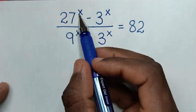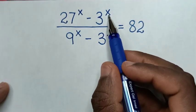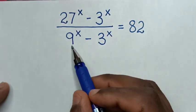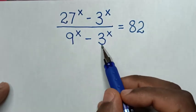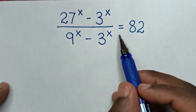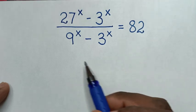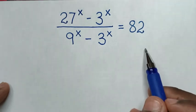How to solve (27^x minus 3^x) over (9^x minus 3^x) is equal to 82? We need to find the value of x from this equation.